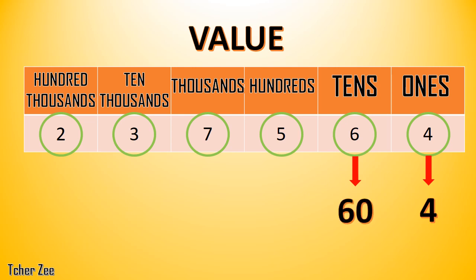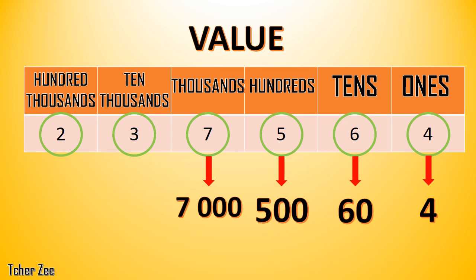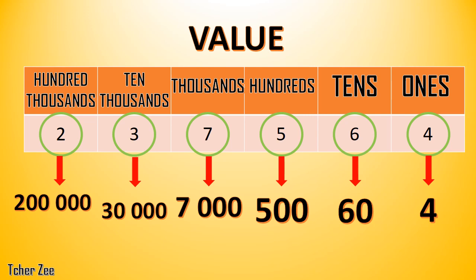How about 5 in the hundreds place value? Yes, the value is 500. How about 7 in the thousands place value? And 3 in the ten-thousands place value? And 2 in the hundred-thousands place value? Yes, that's right — very good. That's 200,000. Good job.